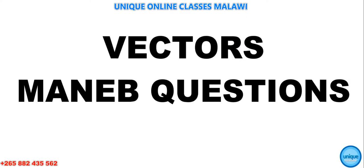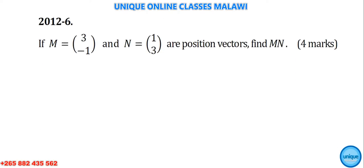In this video I want to do multiple questions about vectors. Let's go to the first equation. It was question number 6, 2012. The question reads: If M is equal to (-3, 1) and N is equal to (1, 3) are position vectors, we should find MN.